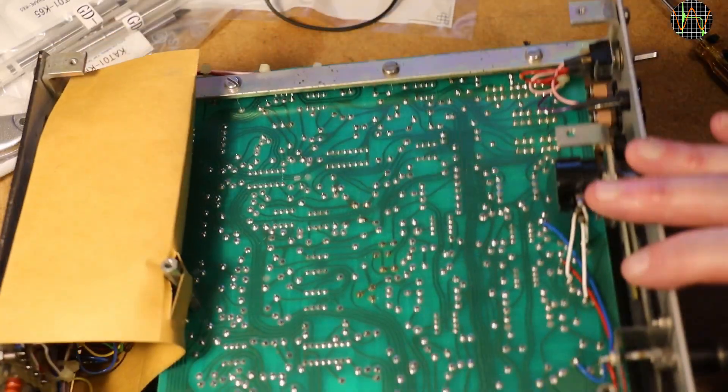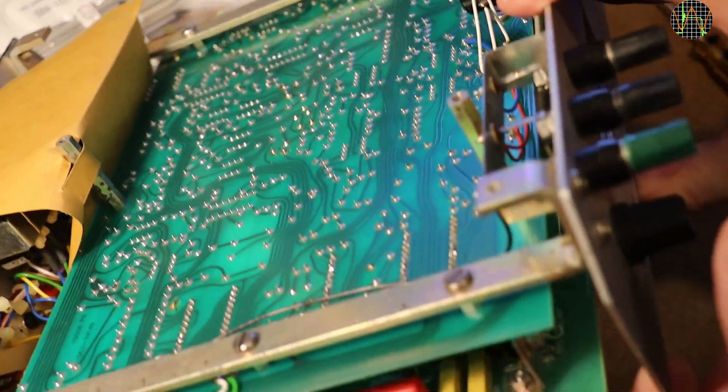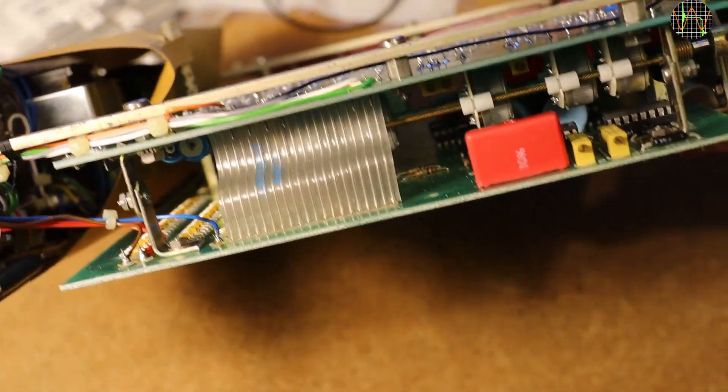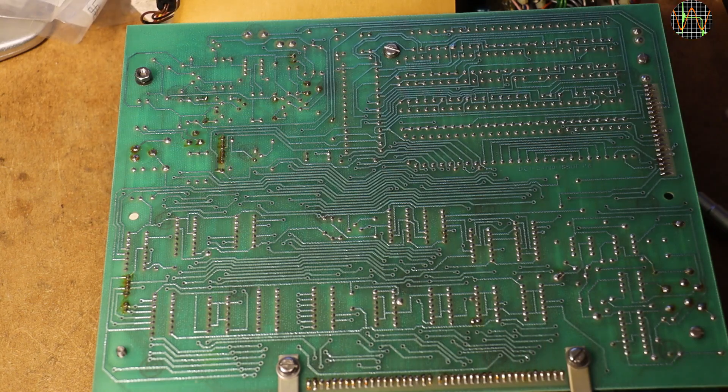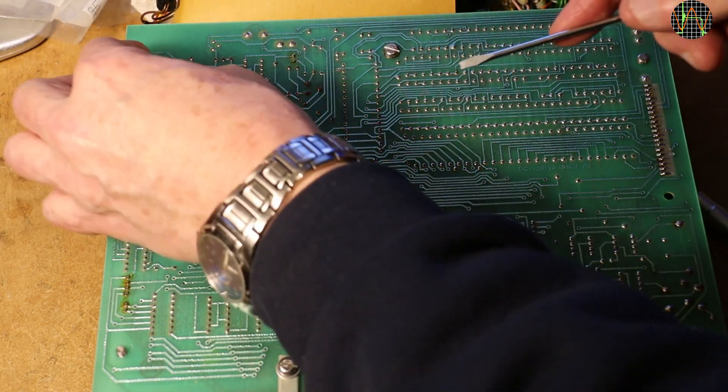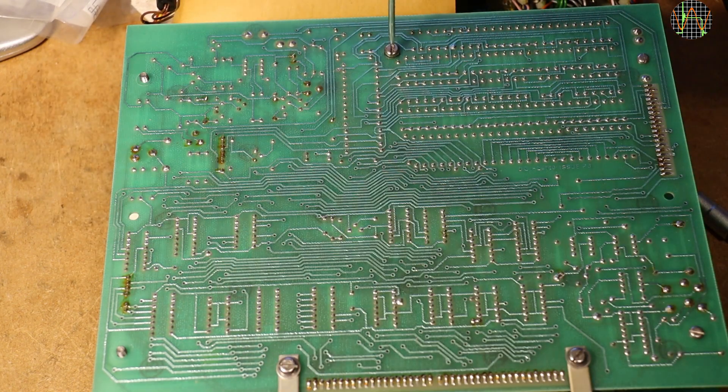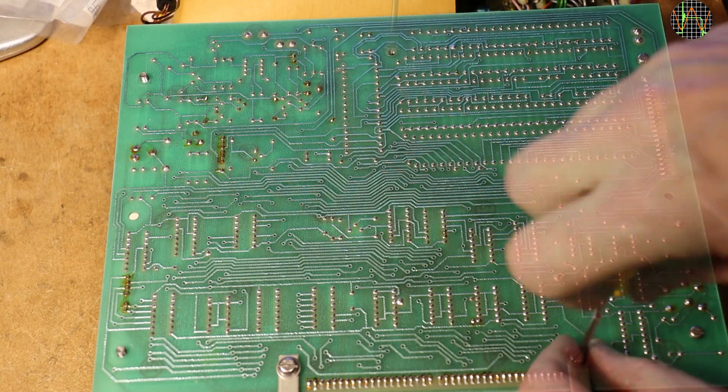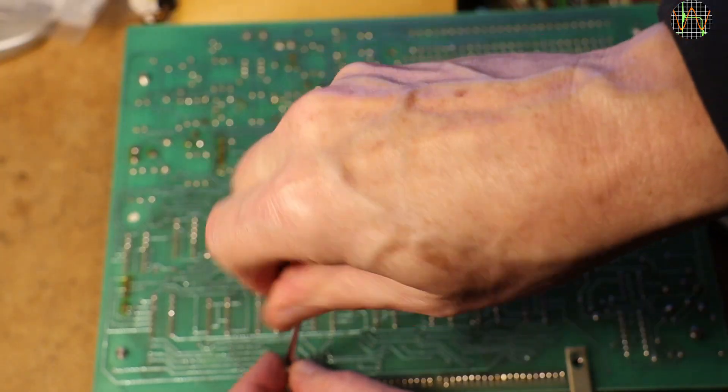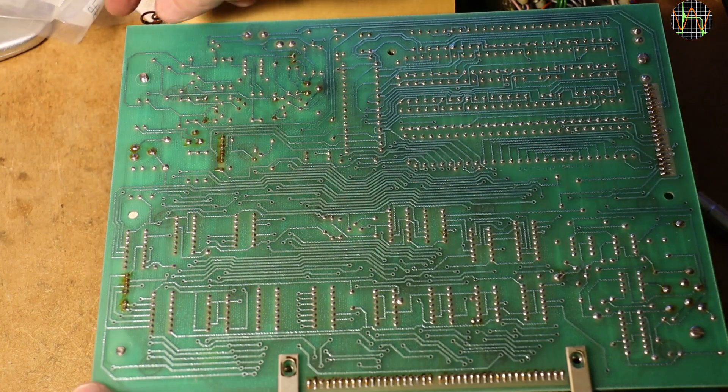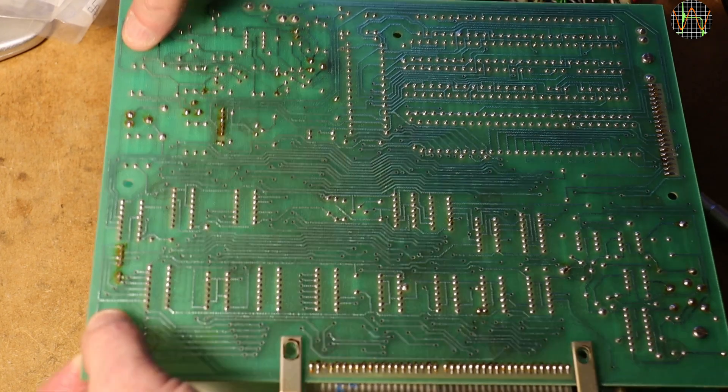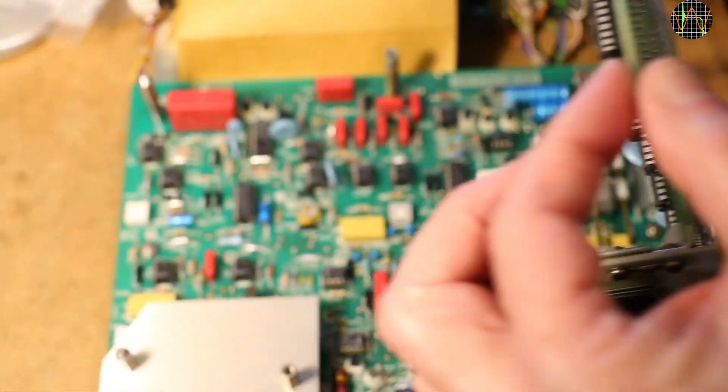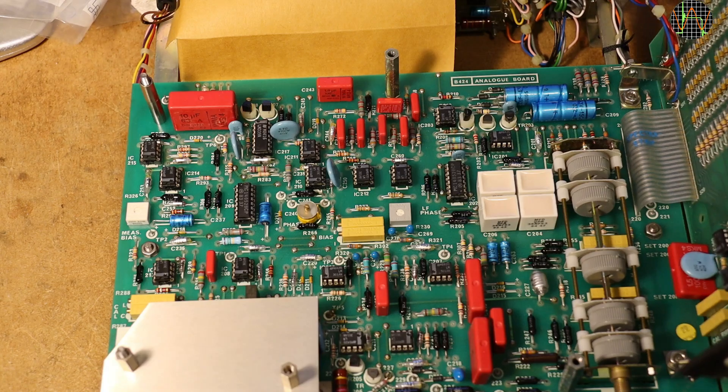The whole thing consists of a sandwich of 2 boards and some more circuitry at the rear panel. The top board can be lifted after removing the 2 nuts and an extra screw at the rear and 2 more screws that hold the display. The top board, which is the digital board, is on hinges and can be flipped open while still staying connected to the analog board below. The B424 stays fully functional in this mode which is nice.